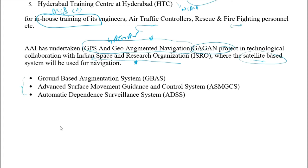Some other important abbreviations to remember: GBAS stands for Ground Based Augmentation Systems. ASMGCS stands for Advanced Surface Movement Guidance and Control Systems - when visibility is low at airports, ASMGCS helps ATC understand the ground situation on the runway and apron areas. ADSS stands for Automatic Dependence Surveillance System. These are important terms that may appear in exams.